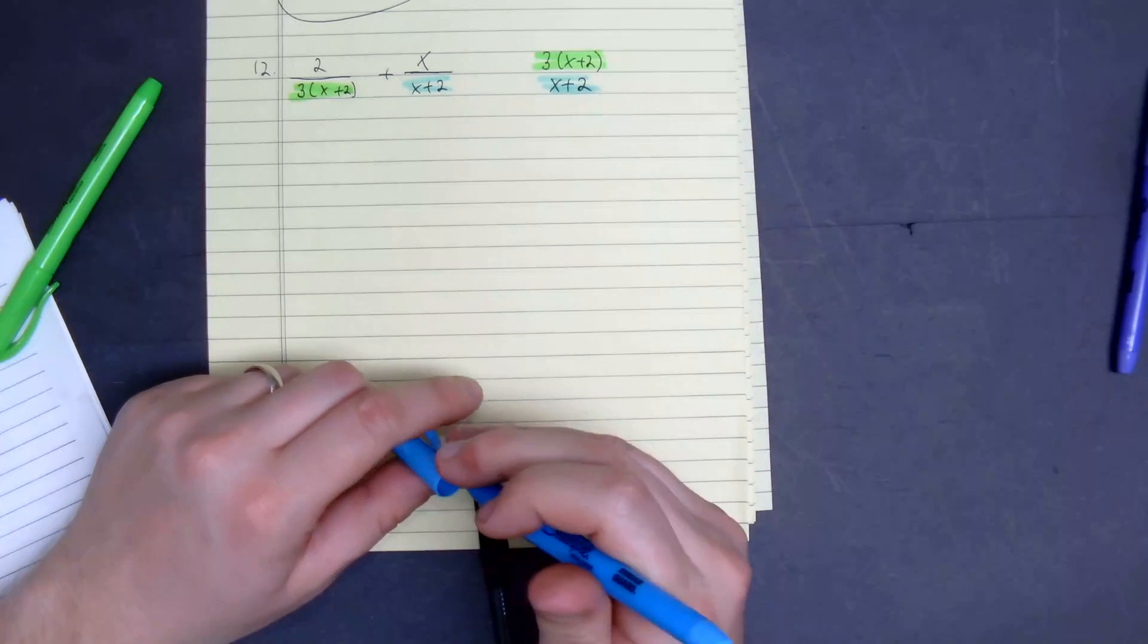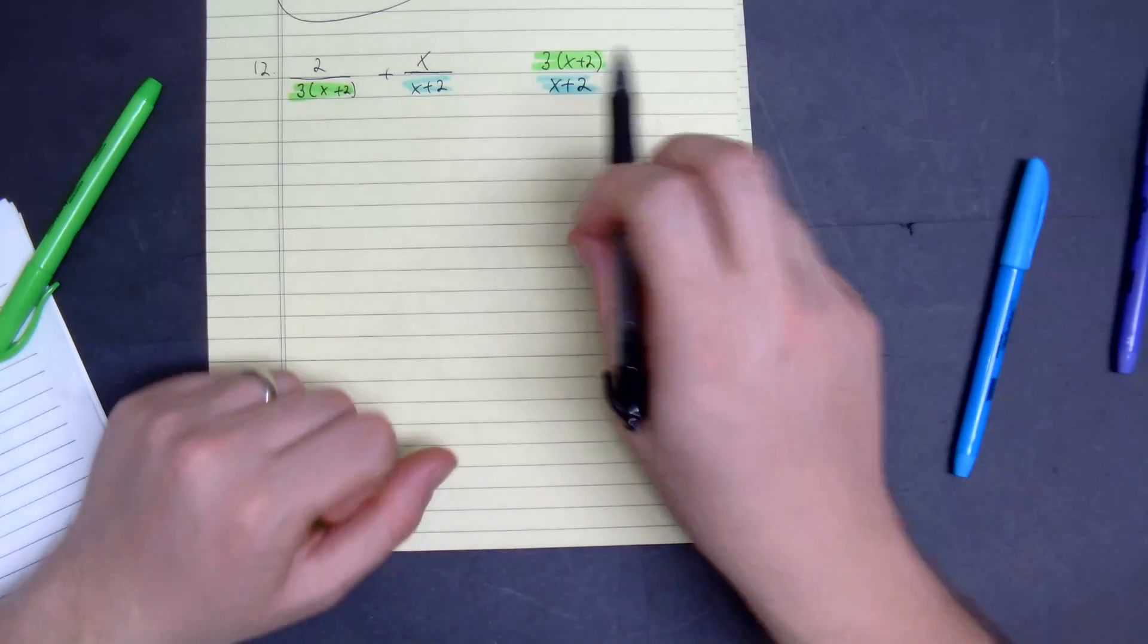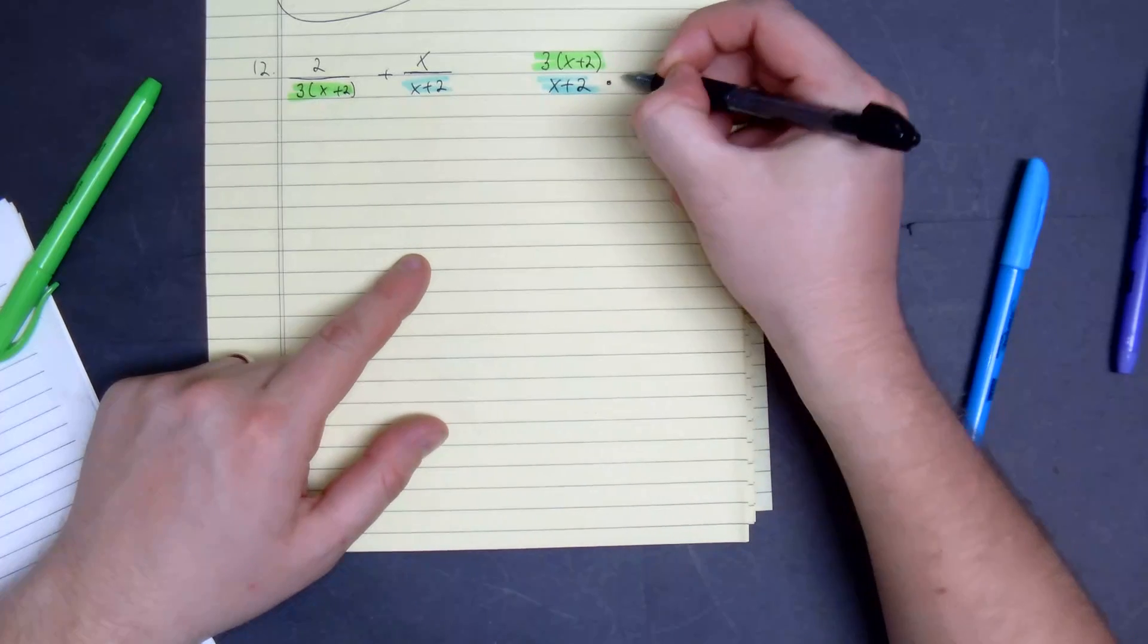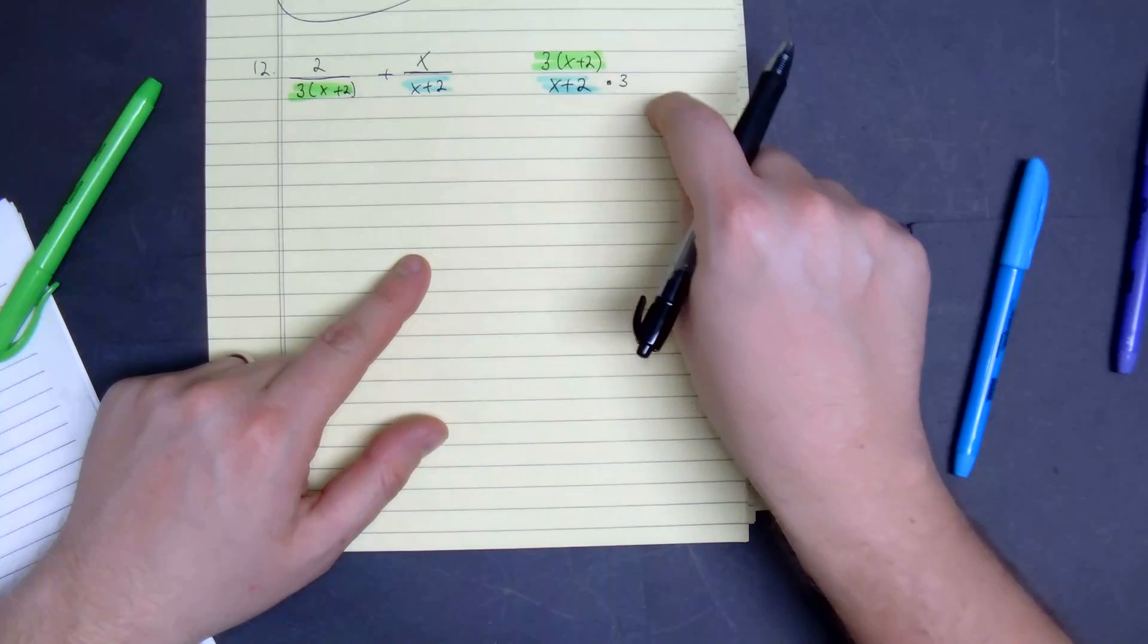x plus 2 is the same, so what we're going to do is multiply the quantity of x plus 2 by 3 so that we have the same LCD between them.